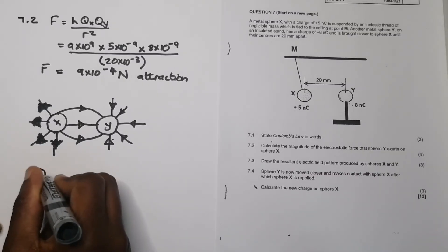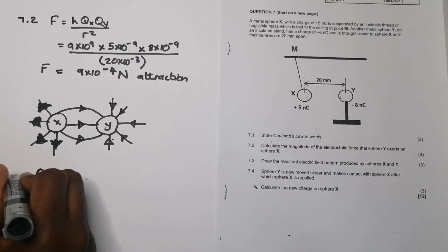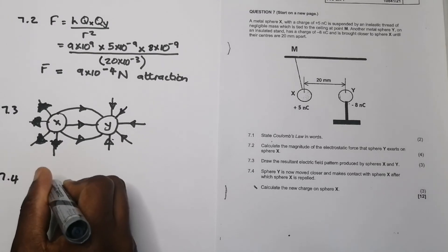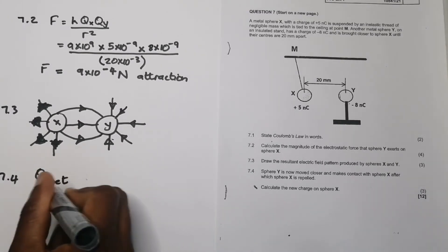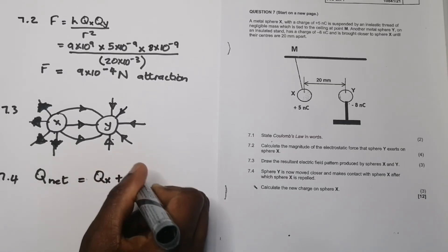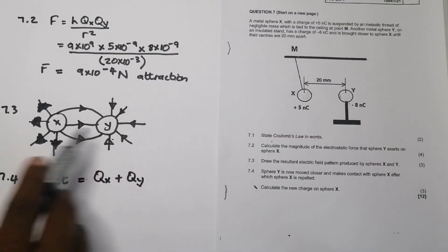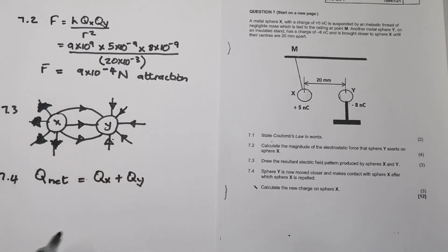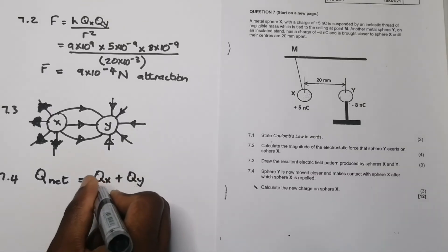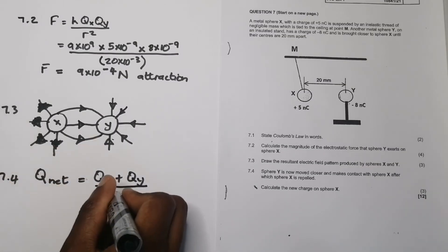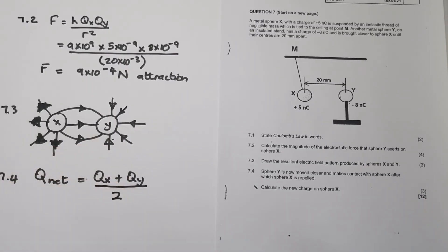So that's 7.4. This was our 7.3. So we say the net charge, or you can say the new charge, would always be the charge of X plus the charge of Y. Now, note, ladies and gents, if I had three charges touching each other, I'd say X, Y, and Z, or whatever the magnitude of the other charge is. So I take the charges, add them up, and divide by the number of charges that I've added. So in this case, I've got two charges. We're simply going to divide by two.